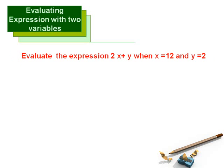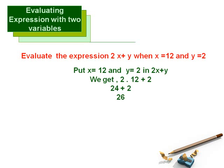For better clarity, let us evaluate this expression. We are given a variable expression as 2x plus y, where x equals 12 and y equals 2. We simply plug in the values of the variables into this expression. So we get 2 times 12 plus 2. On solving, it becomes 24 plus 2, which gives us 26 as the answer for the variable expression.